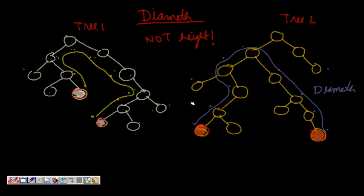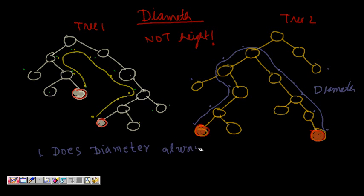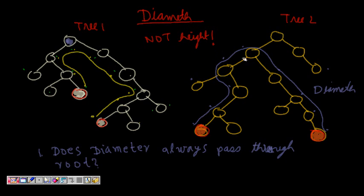So now the thing is — what are the properties of diameter? Let's try to observe to solve this problem. First question: does diameter always pass through the root? No. In this case it was passing through the root node, but here it is not passing through the root node. So it's not necessary — the answer is no.